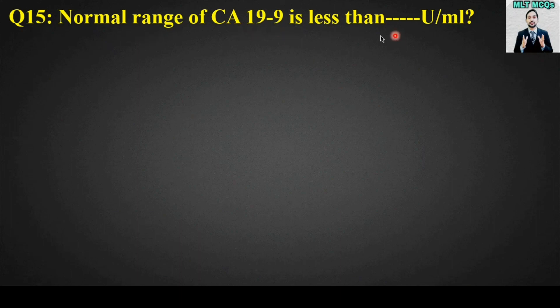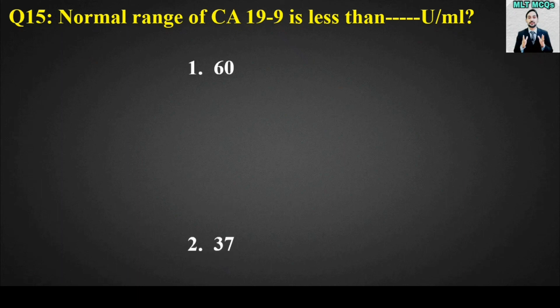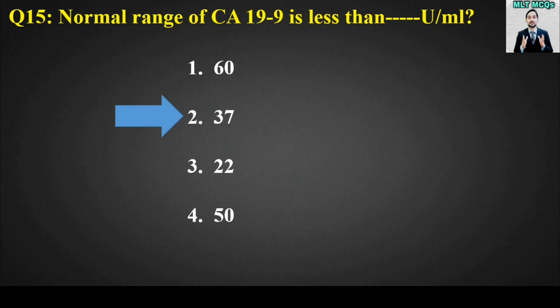MCQ number fifteen: The normal range of CA-19-9 is less than blank units per milliliter. Options are 60, 37, 22, or 50. The right answer is option number two: 37. The normal range of CA-19-9 is less than 37 units per milliliter.